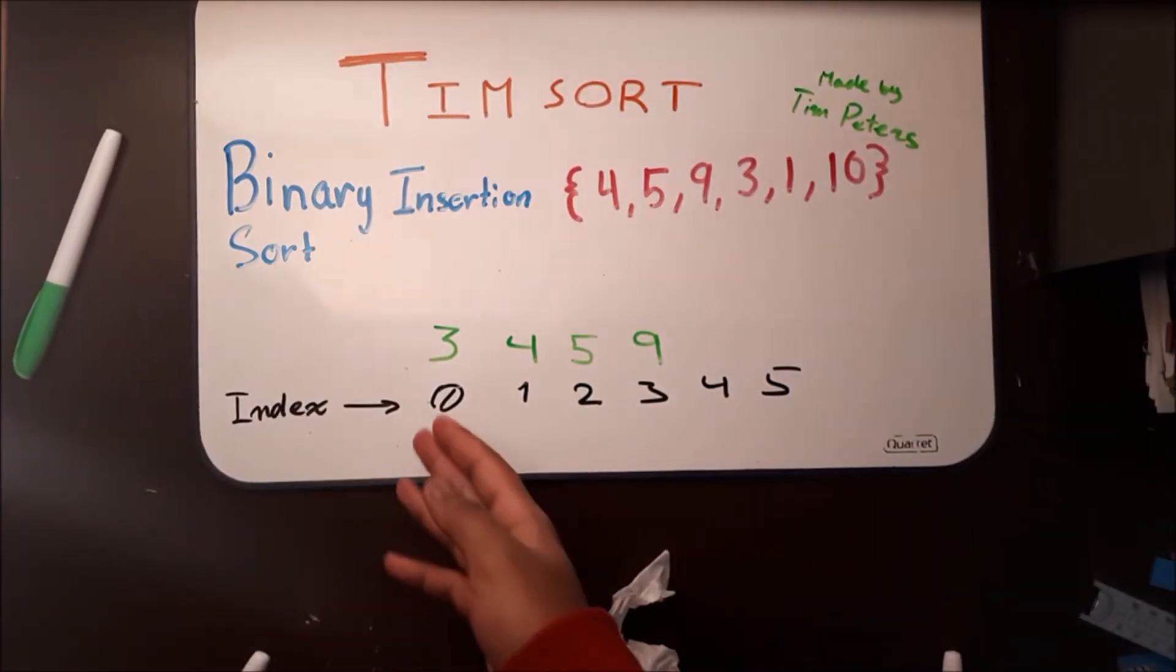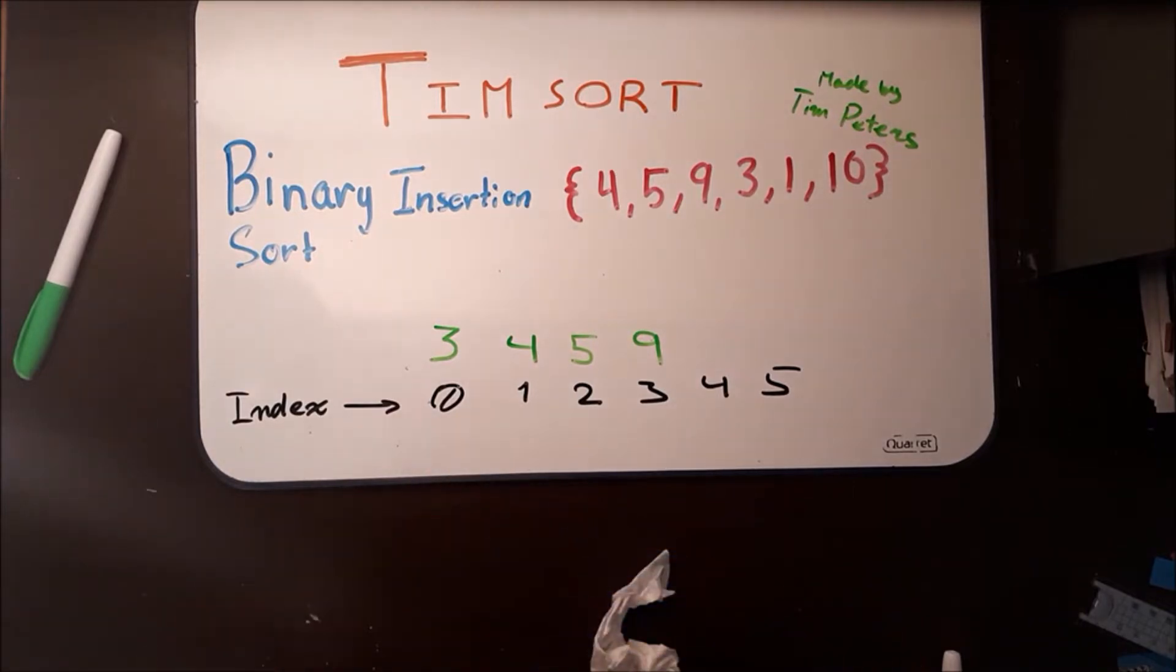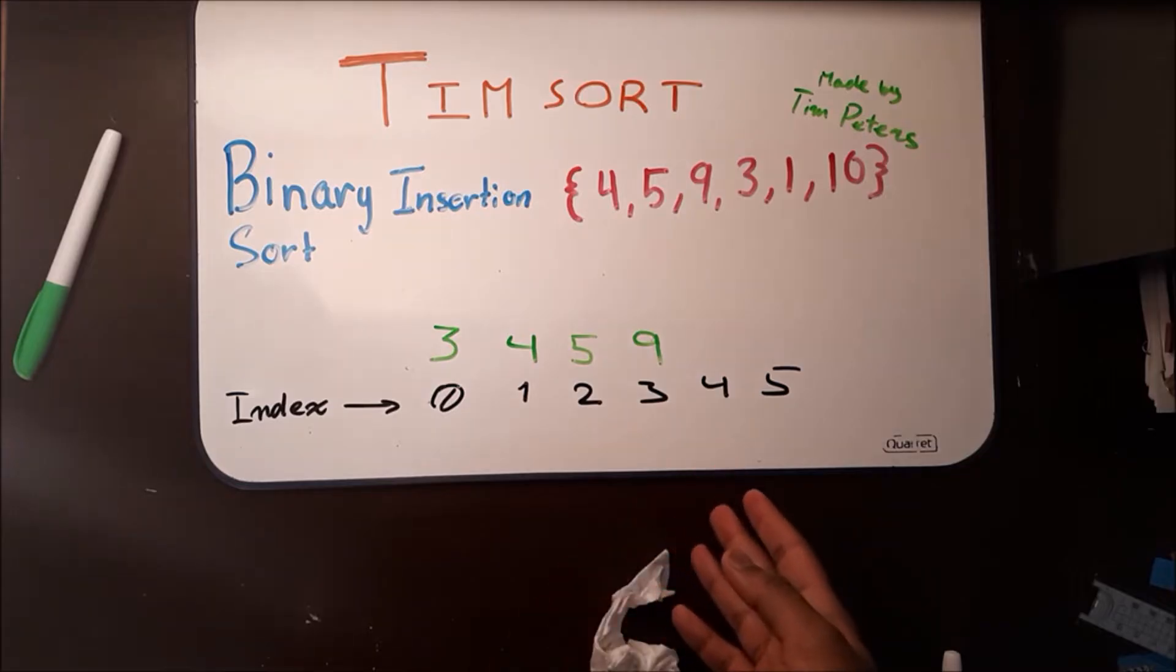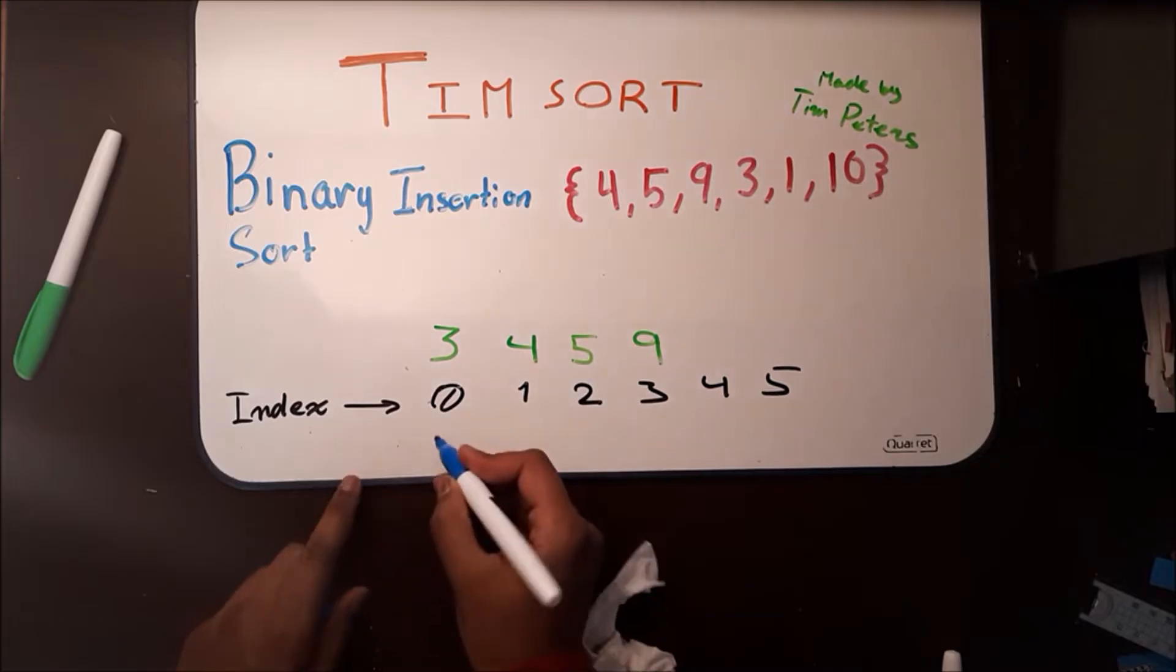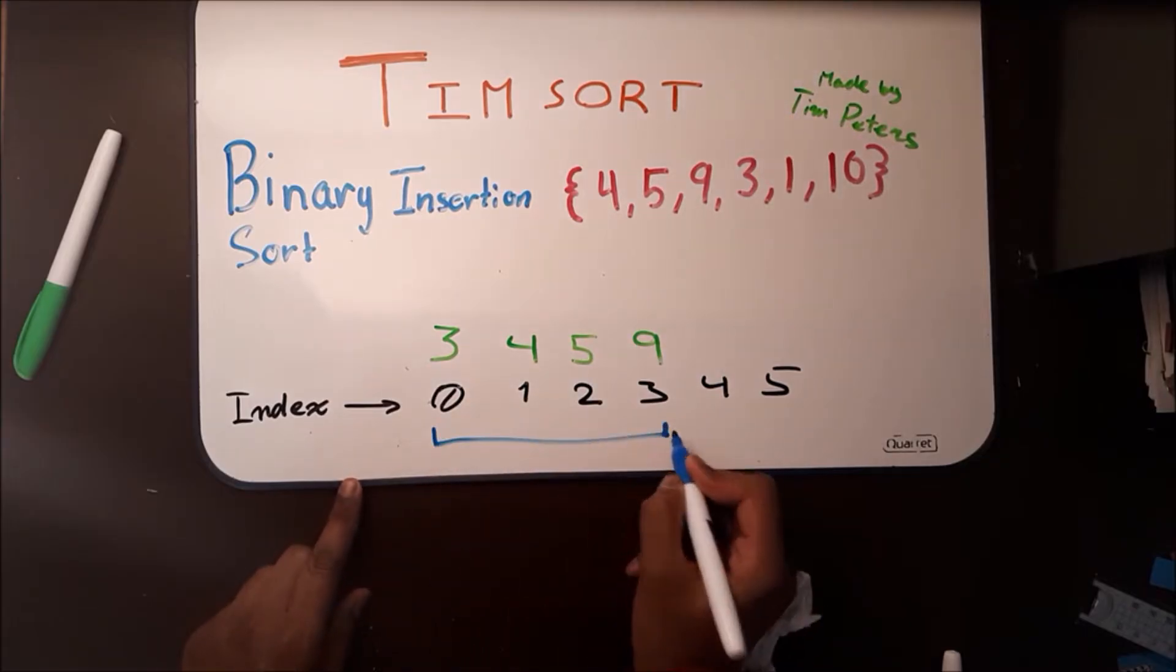Alright, now that we've put 3 where it belongs, we can continue down our array. So after 3 is 1. We run into the same problem again. 1 actually belongs to the left side of 9. So we're going to do the same binary search.